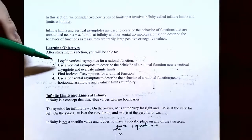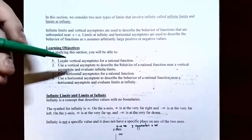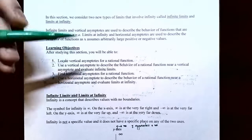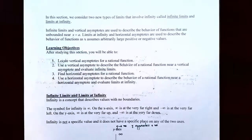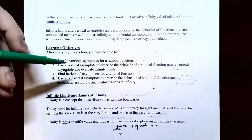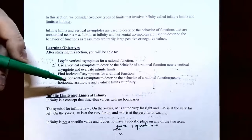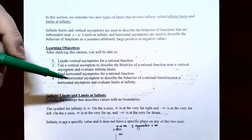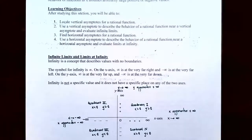In this video, we're going to talk about how to locate vertical asymptotes for a rational function, how to use a vertical asymptote to describe the behavior of a rational function near it, and how that relates to infinite limits. We'll also cover how to find horizontal asymptotes for a rational function and how to use them with limits at infinity. Let's start with infinite limits and limits at infinity.